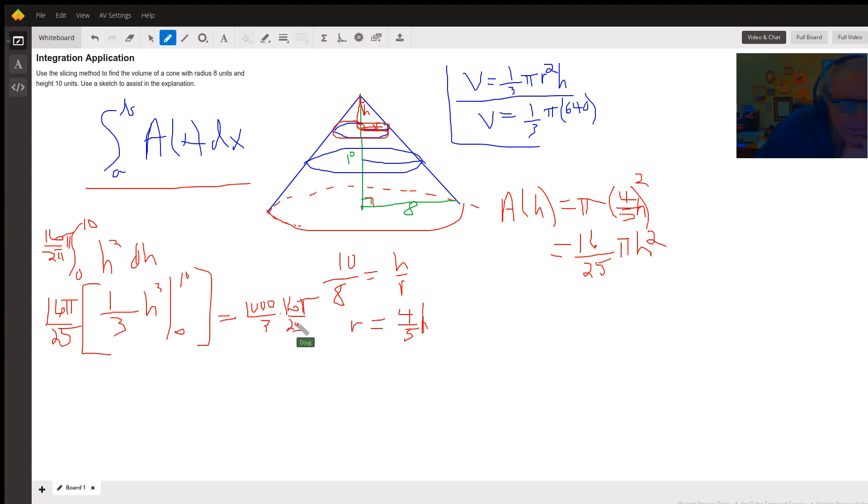I get 1,000 thirds times 16 pi over 25. And this 25 goes into 1,000 40 times. 40 times 16 is 640 pi over 3 cubic units. And that's the same we got using the formula.